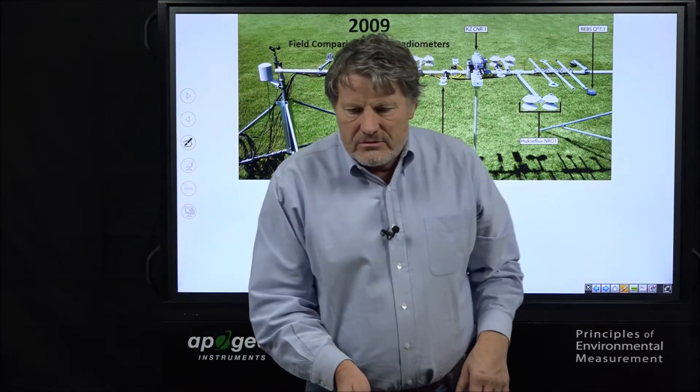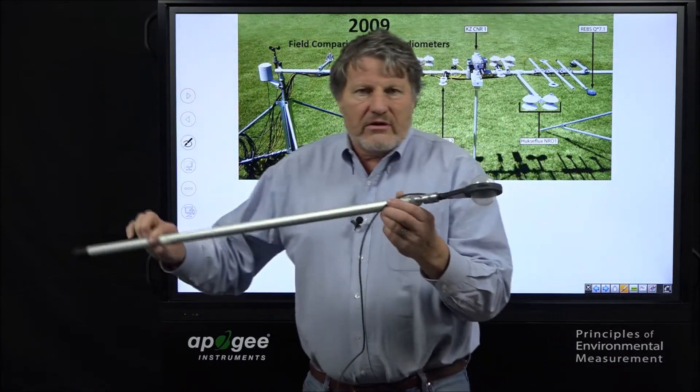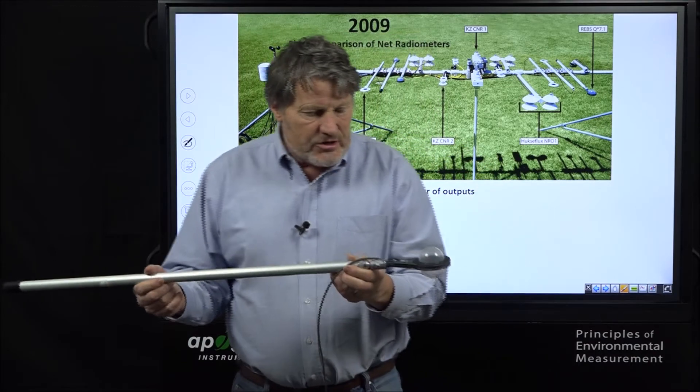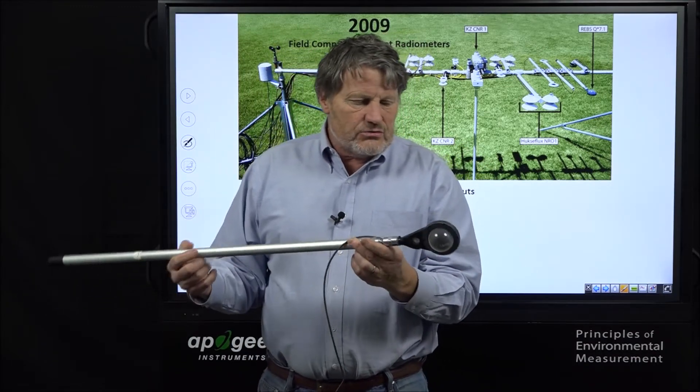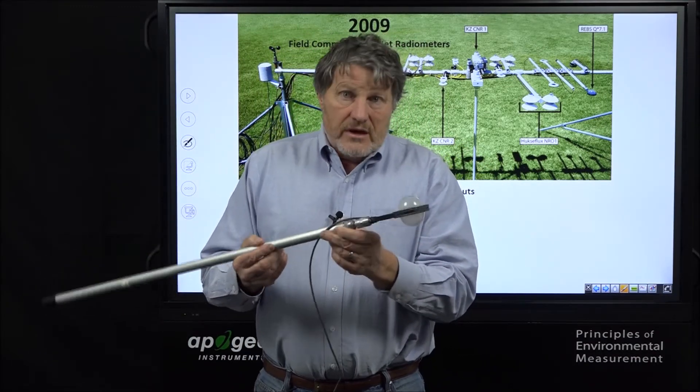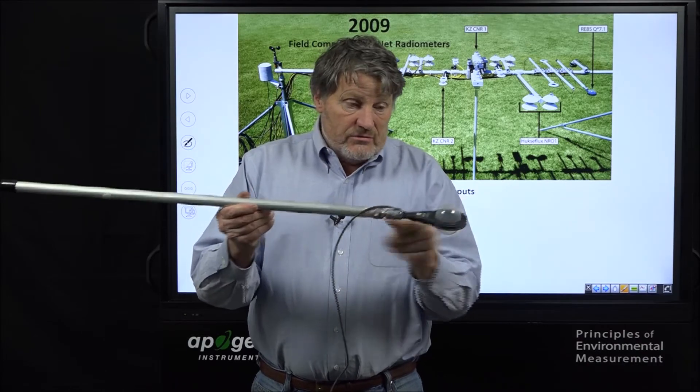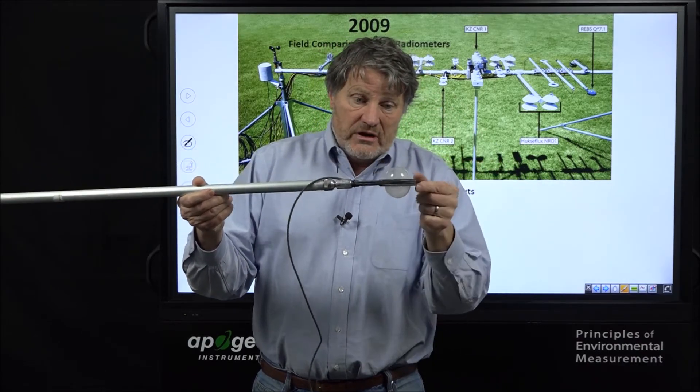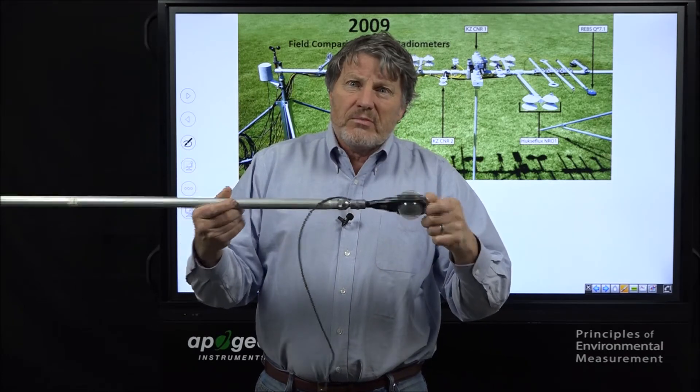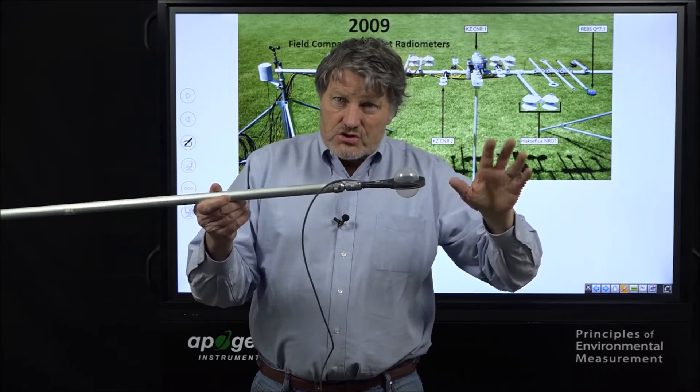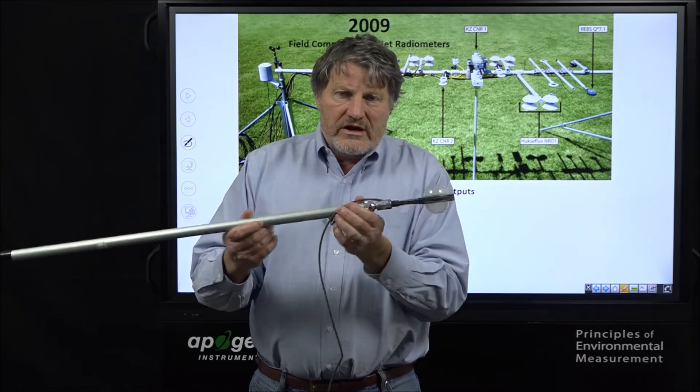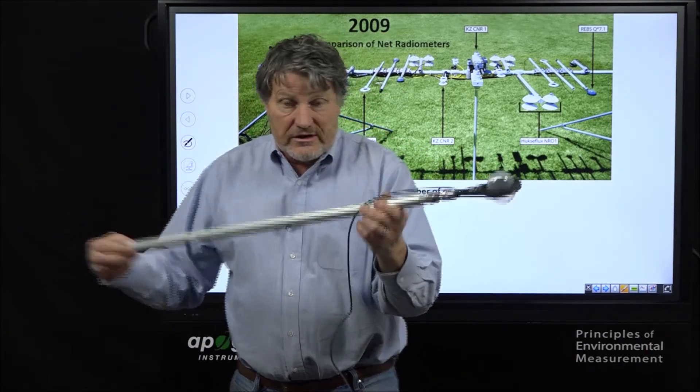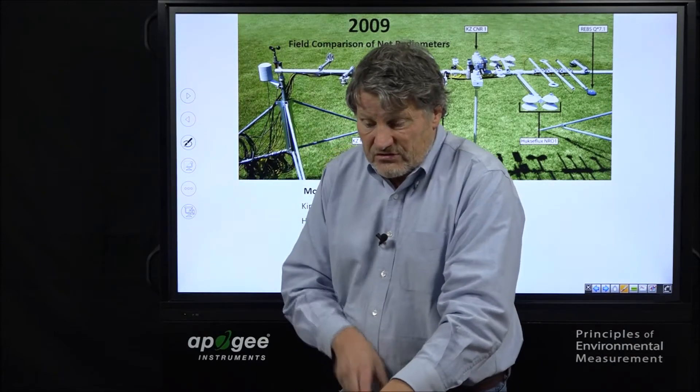So let's start at the low end. One of our instruments was this one. This is a radiation and energy balance systems, model Q7.1. It attempts to get at radiation by, and all of these are nets, so they have an incoming and an outgoing, just by one simple black body that attempts to balance short- and long-wave radiation. This is the lowest cost of these instruments in the study, and we're going to look at how this did.